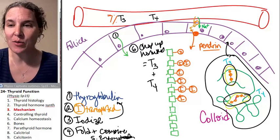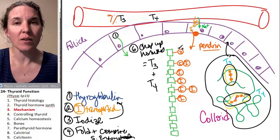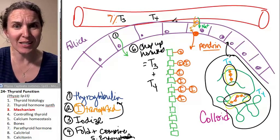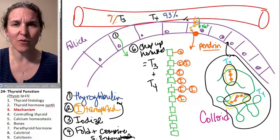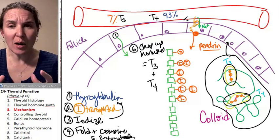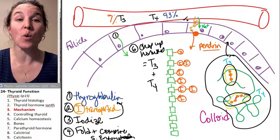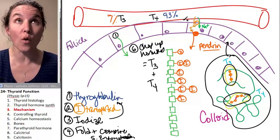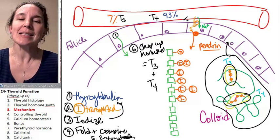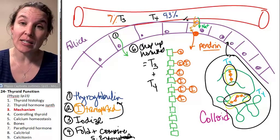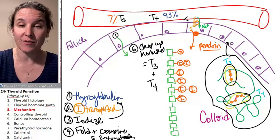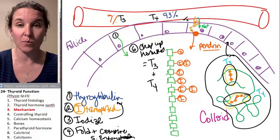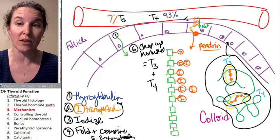However, only 7% of thyroid hormone that's produced is T3. 93% is T4. So there's a couple of things that happen. First of all, T4 naturally degrades over time slowly into T3. Secondly, sometimes target tissues have an enzyme that will break off an iodine and make a T4 into a T3.